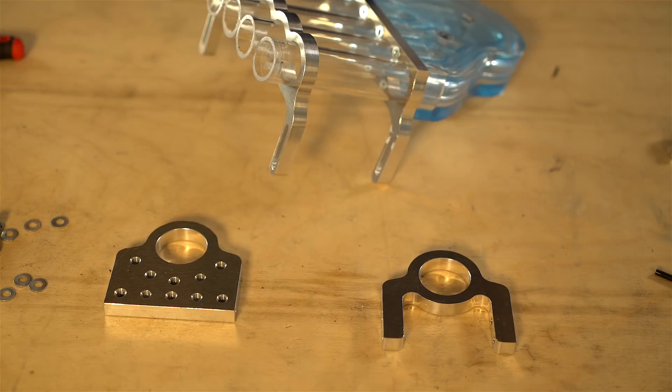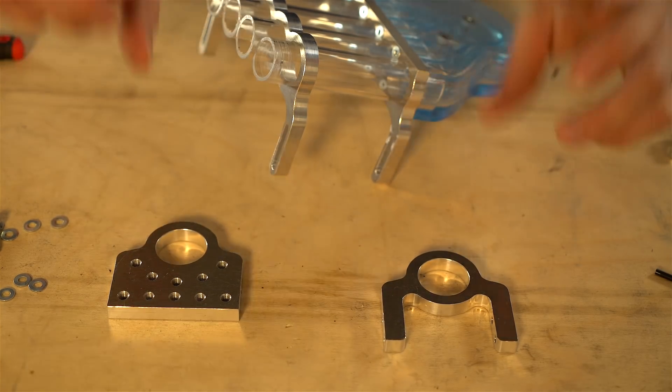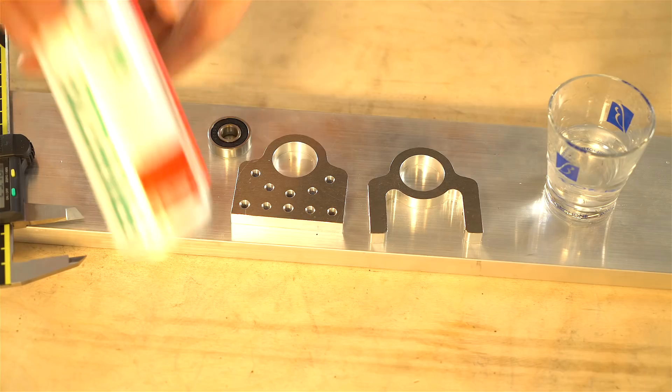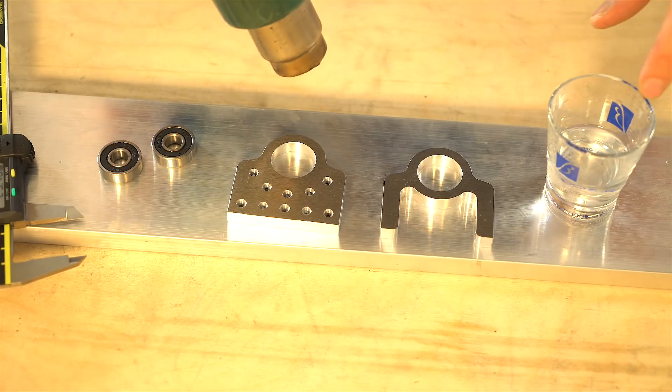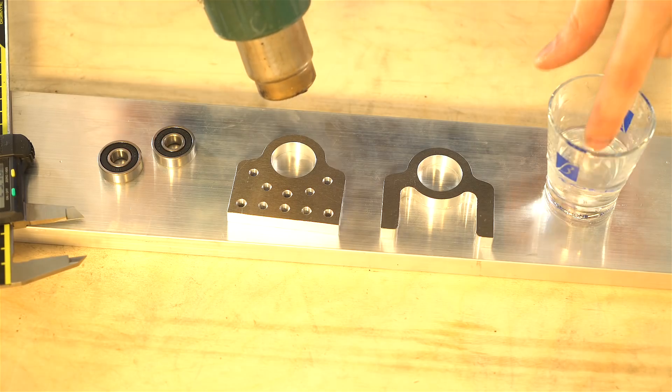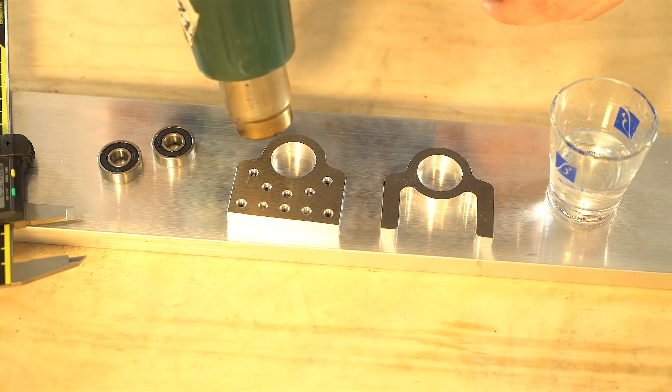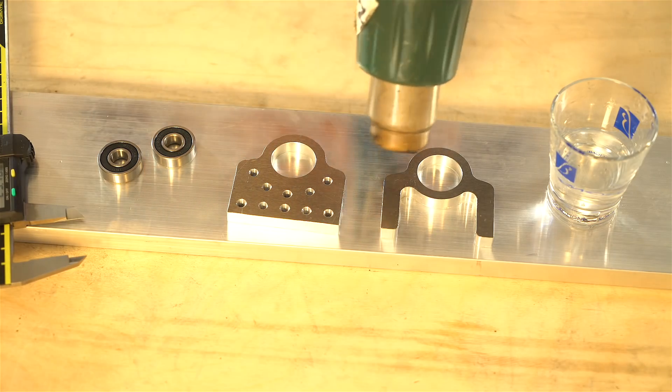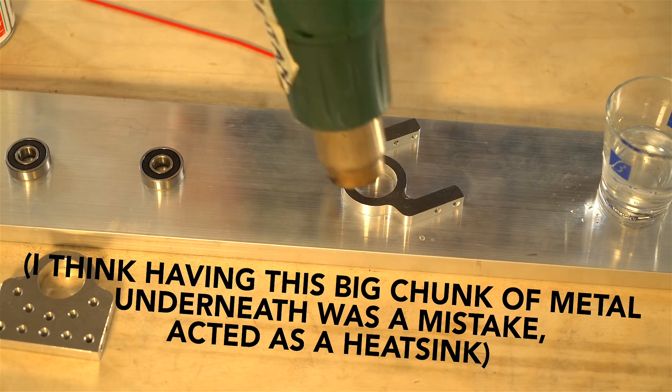Next part. We're going to press fit these bearings and the tolerance is really tight. So Alex told me a trick. Freeze spray, heat gun. So I'm going to heat aluminum and Alex said that when a drop of water boils fast, that means aluminum is 145 degrees and that's the temperature he wants me to go for.